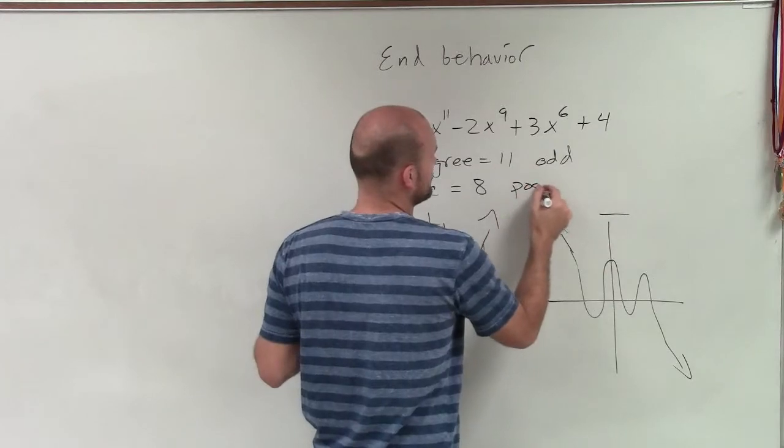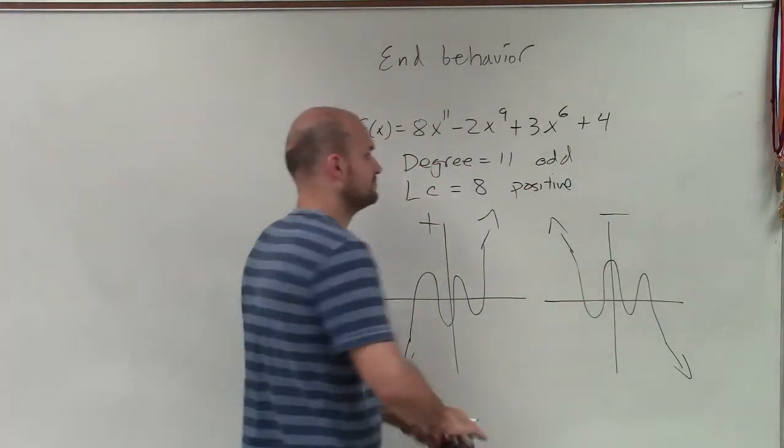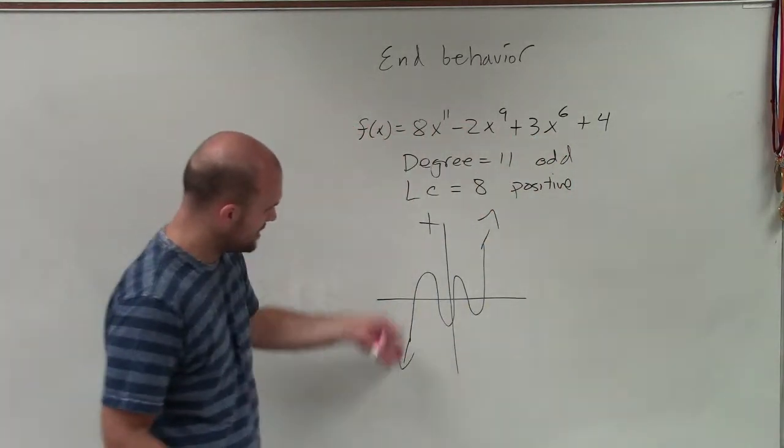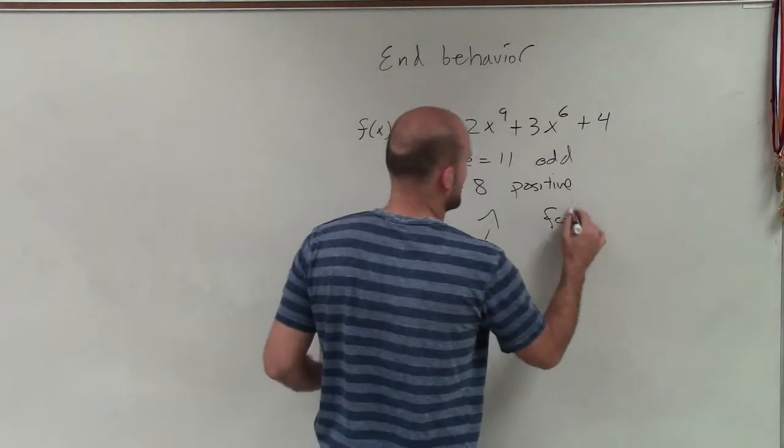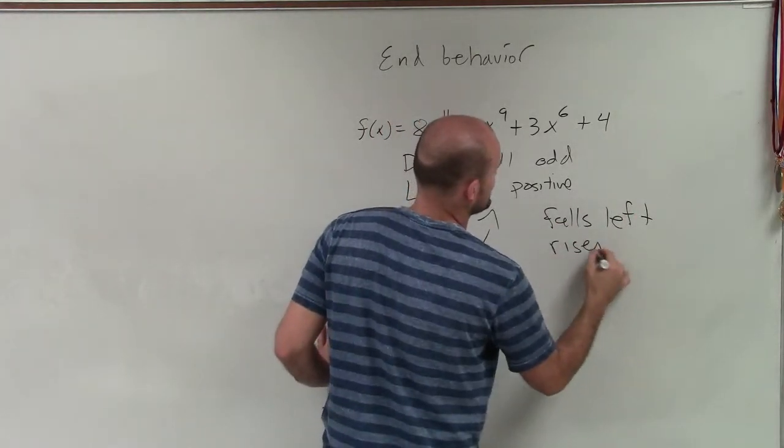Well, this is positive, obviously. That's a positive 8. So therefore, we're not going to worry about what it would be if it was negative. So now we just look at this graph and say, all right, this graph now falls left and rises right.